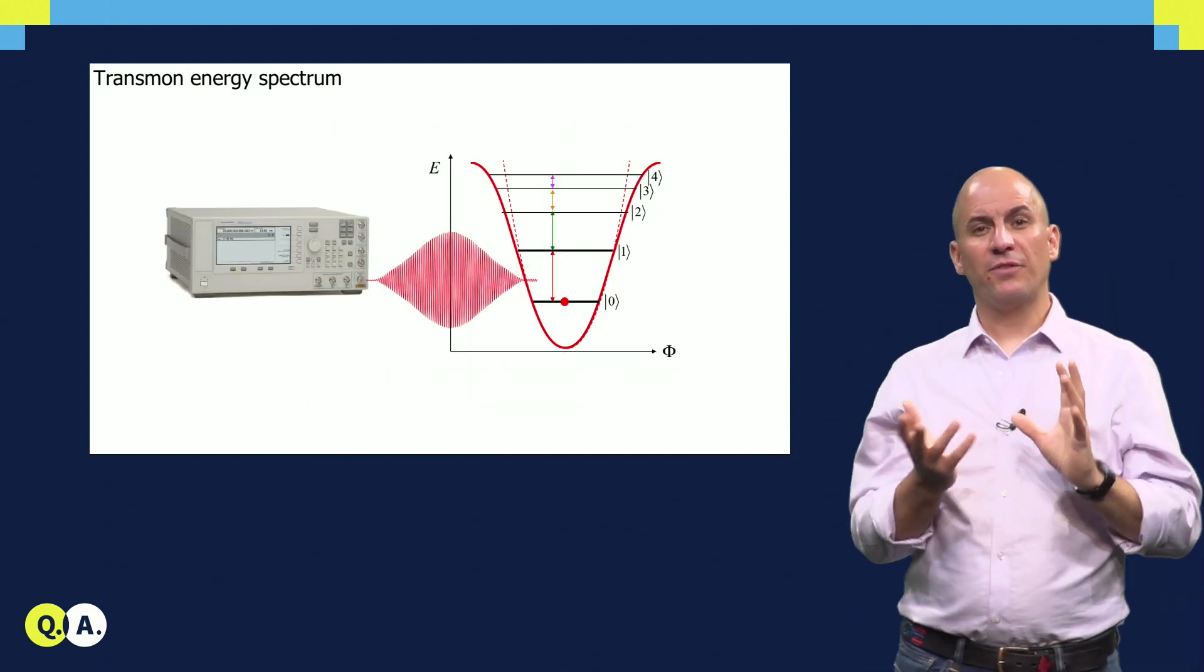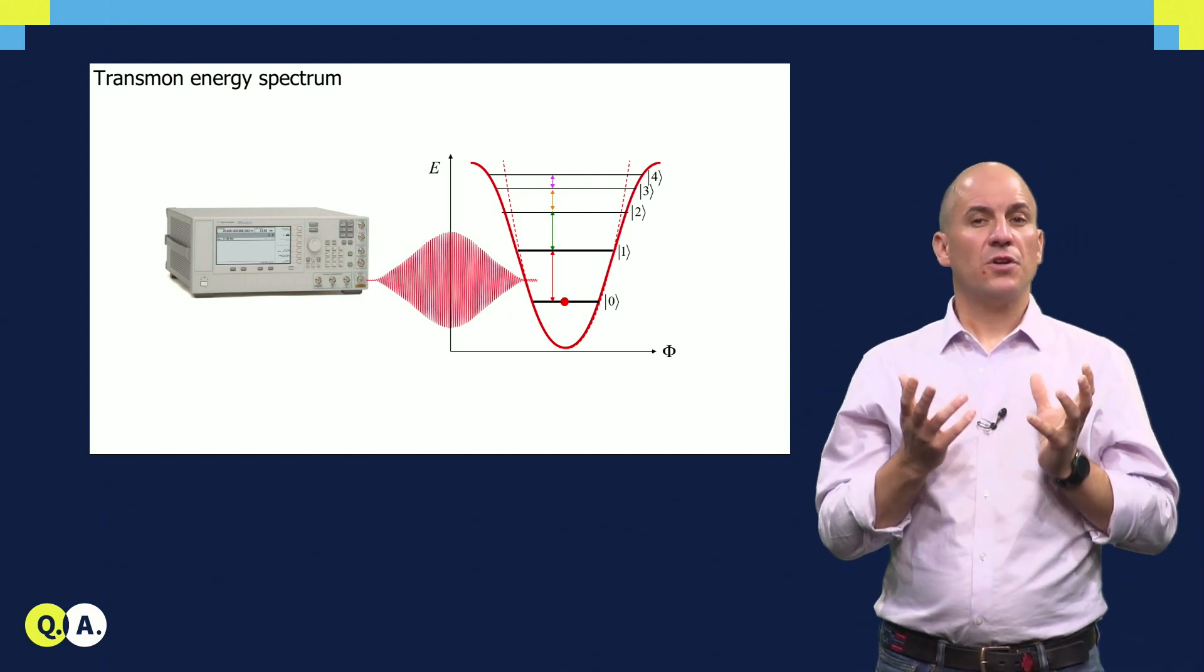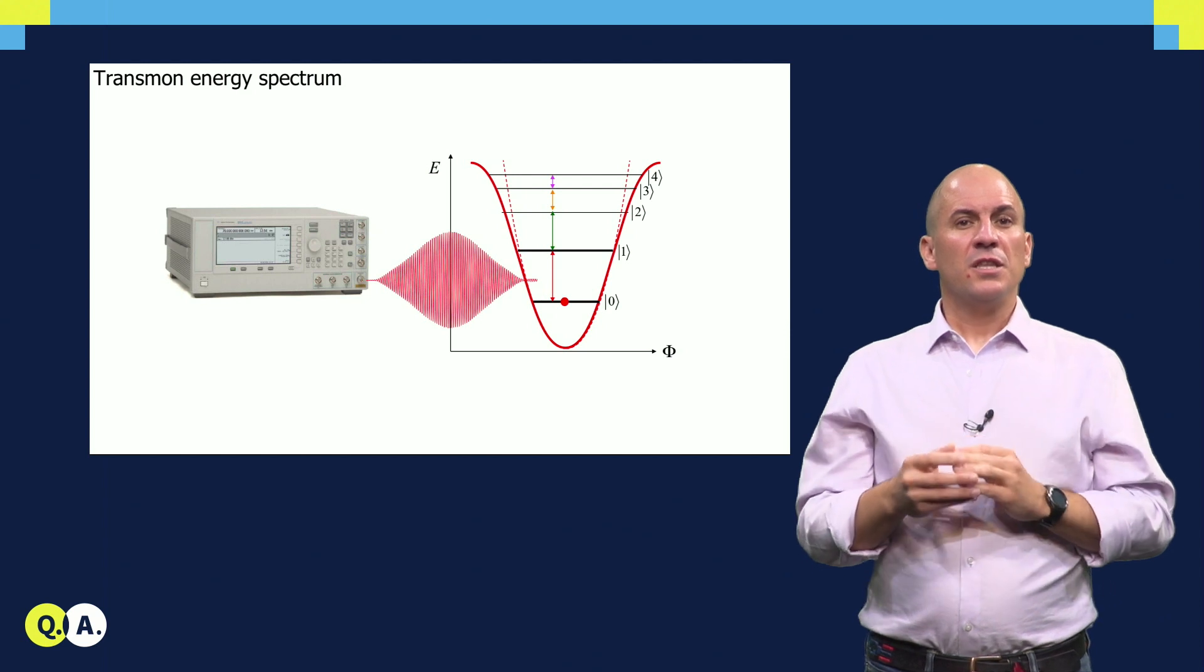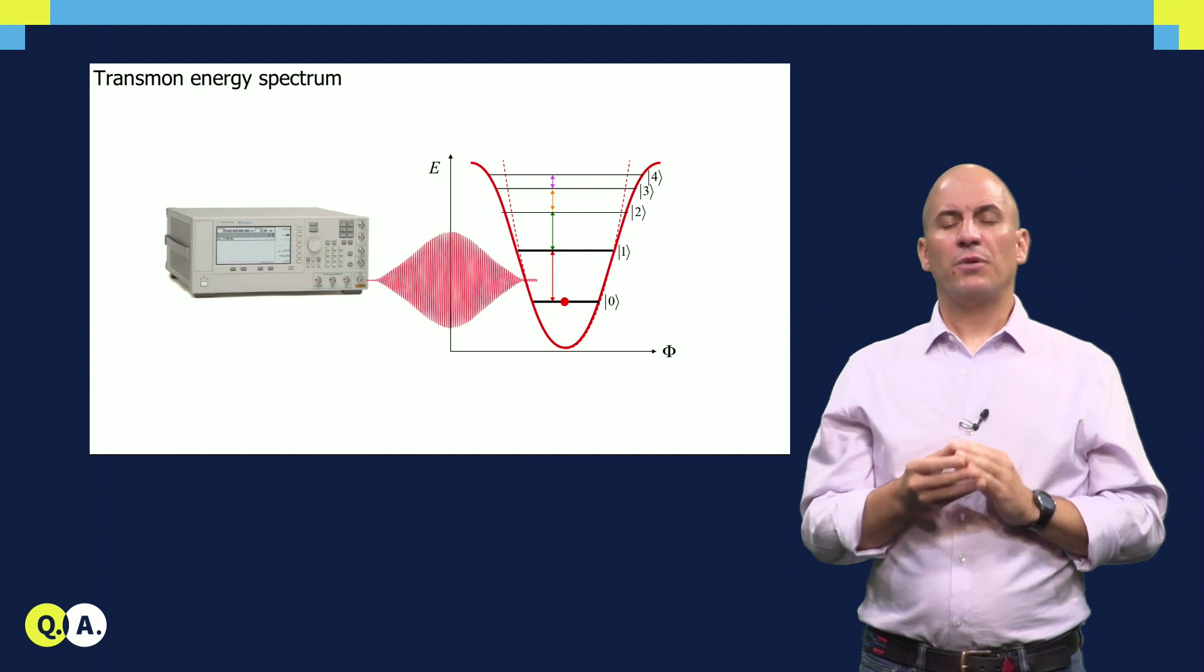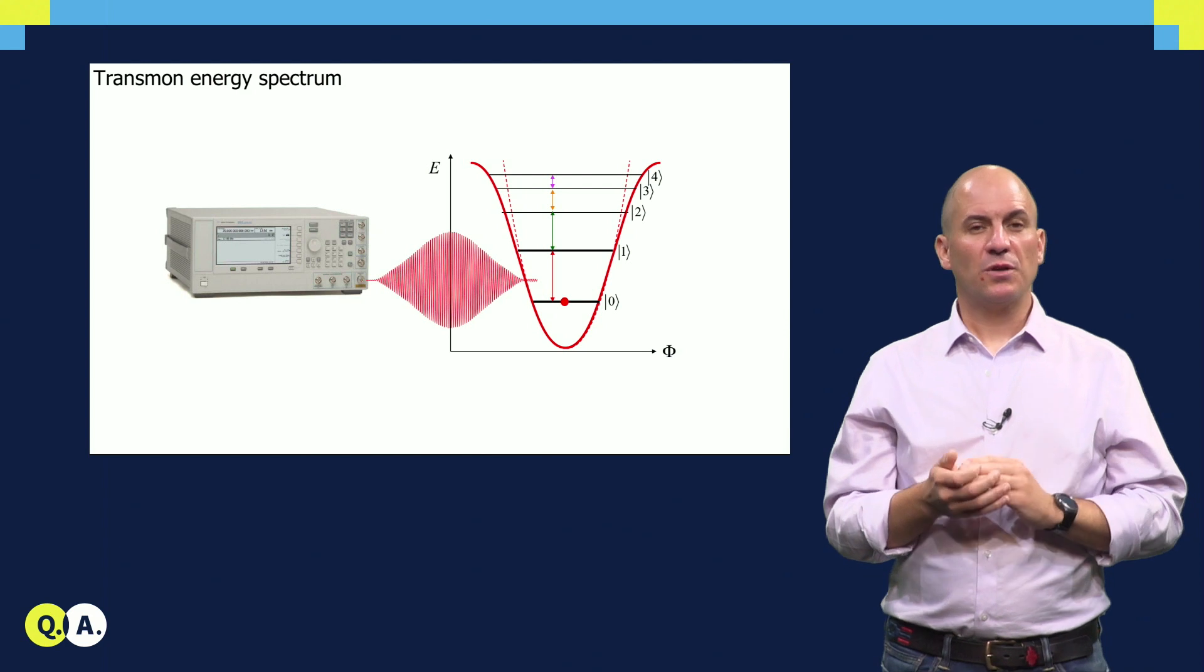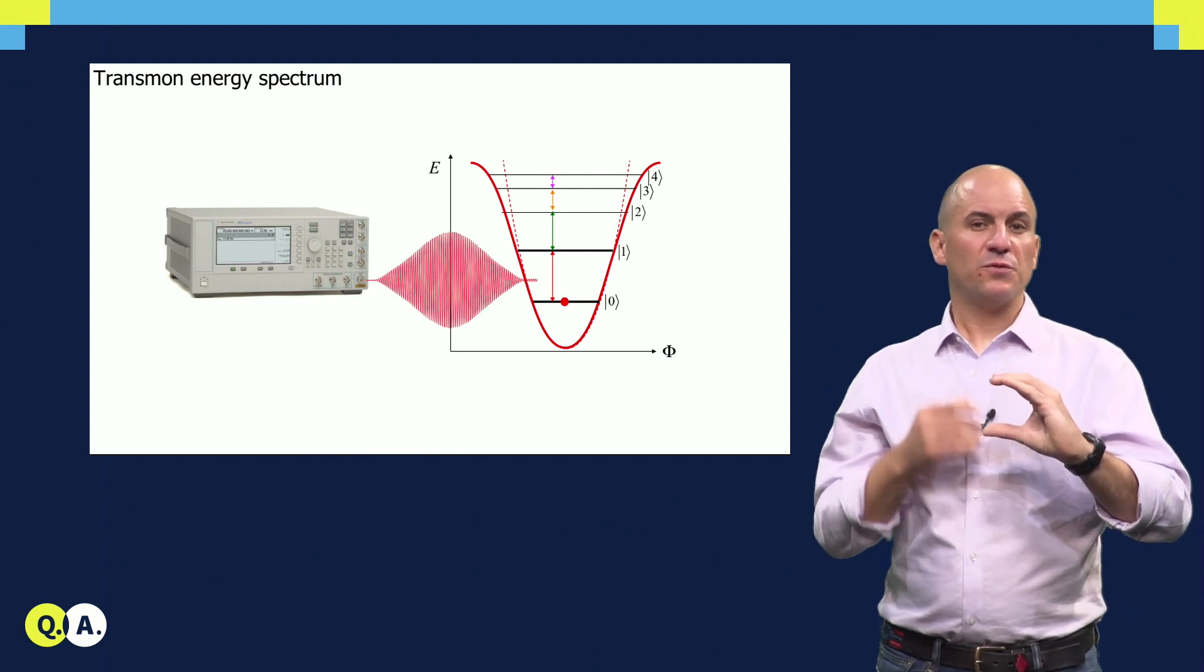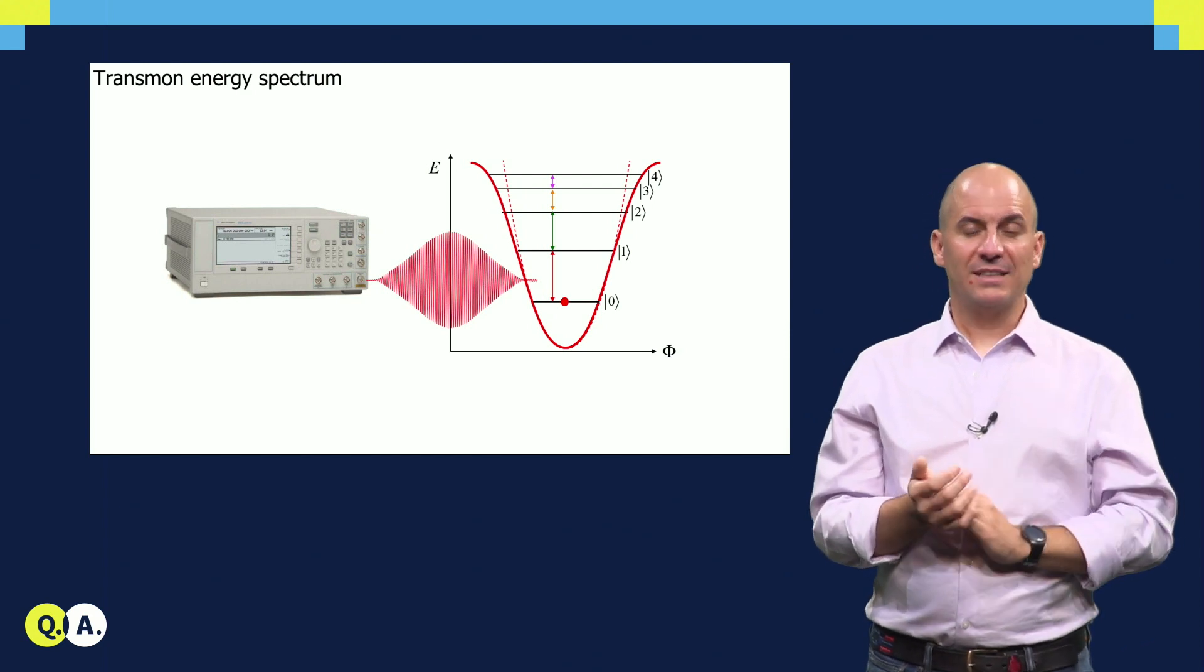At typical parameter values deep in the so-called transmon regime, where the energy scale of the inductive term is much larger than that of the charging term, and let's say for a frequency F01 of about 6 GHz, the transition F12 from the first to the second excited state is lower by approximately 300 MHz. This difference is sufficient in practice to confine the dynamics to the two lowest levels, our qubit subspace, when performing single qubit gates with pulses of duration about 20 ns. Brian will discuss the implementation of single qubit gates in detail.